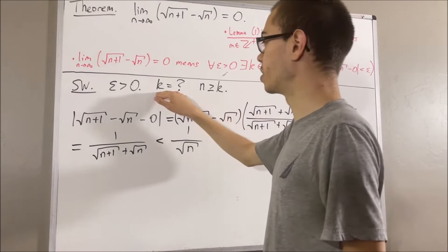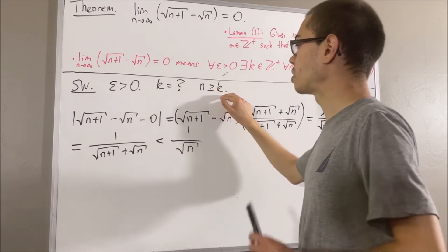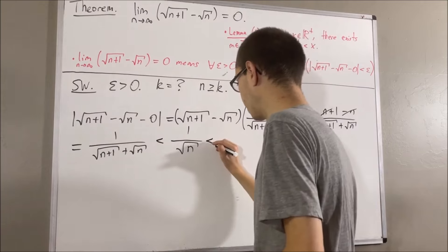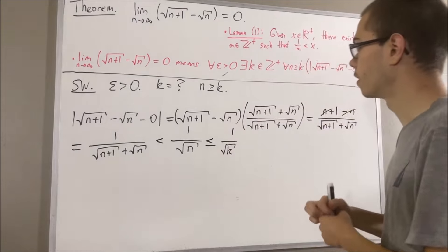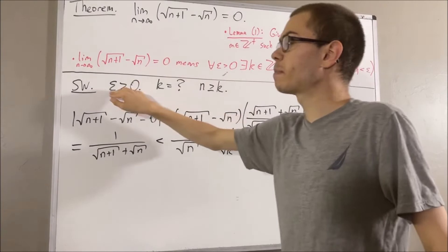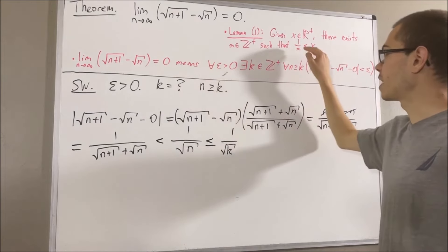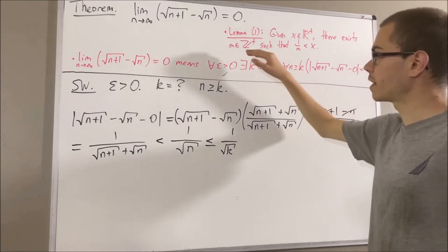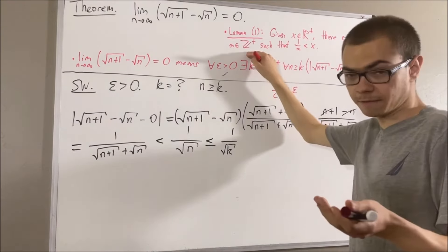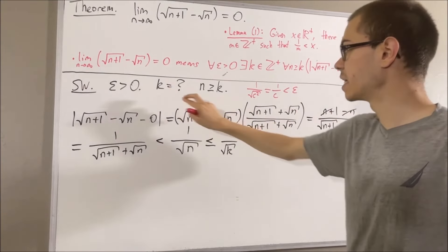Maybe it's at this point we try to figure out what we should choose k to be. Let's bring k into our work. Since n is greater than or equal to k, it follows that the square root of n must be greater than or equal to the square root of k. Taking the reciprocal of both sides, we have that 1 over the square root of n is less than or equal to 1 over the square root of k. To figure out what we should choose k to be, all we've got to do is apply lemma 1. If we take x to be epsilon — we can do that because epsilon is a positive real number — then there is at least one positive integer which satisfies this inequality for x equals epsilon. Let's say that c is a positive integer which satisfies 1 over c is less than epsilon. Since c is positive, we know that c is just equal to the square root of c squared. So all we've got to do is take k to be the positive integer c squared.